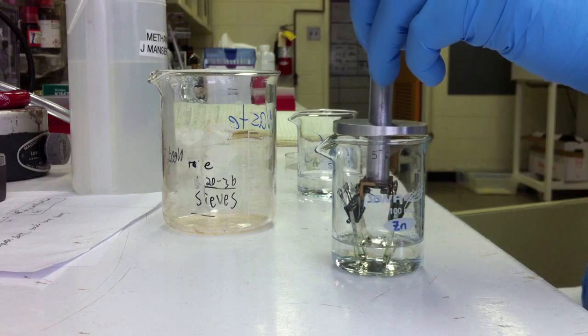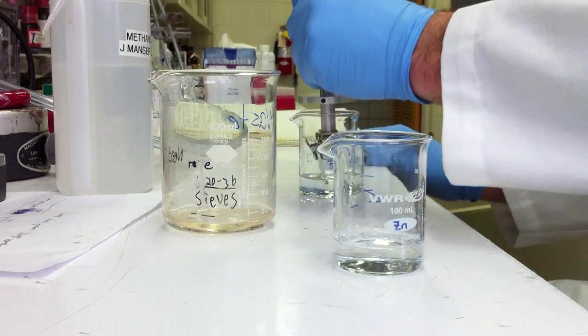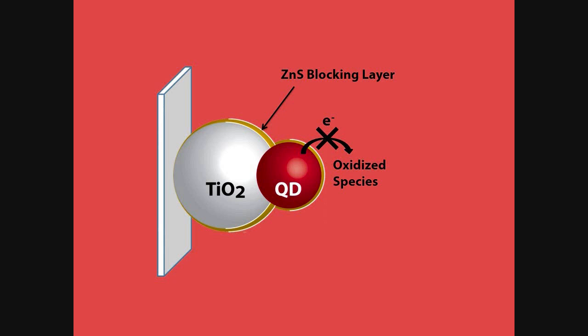After sensitizing our TiO2 films, we deposit a zinc sulfide blocking layer using SILAR. This layer prevents back electron transfer from our sensitizer and TiO2 particles into our liquid electrolyte.